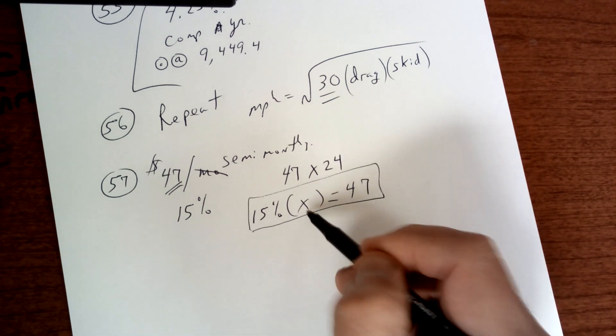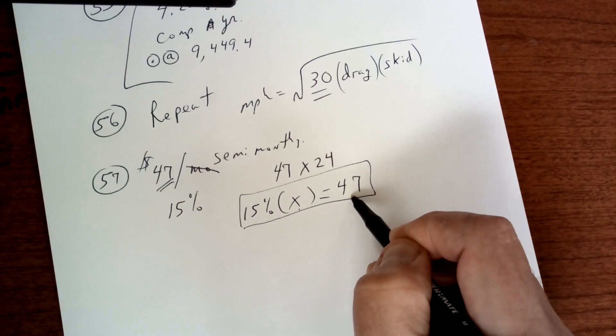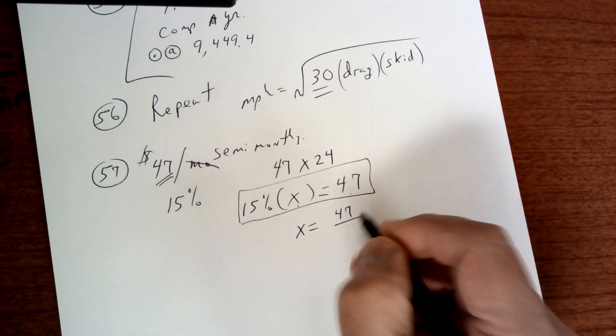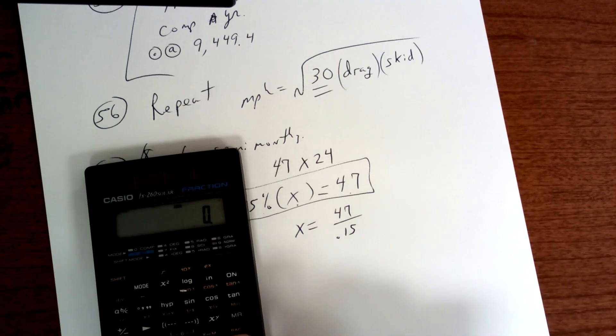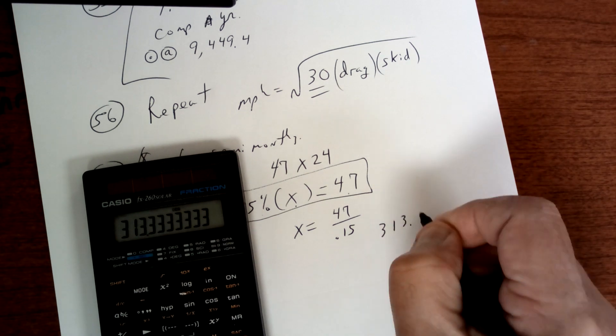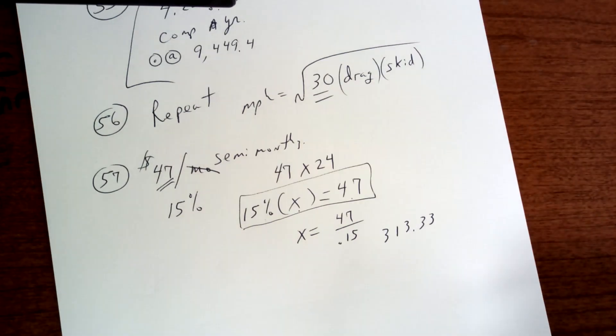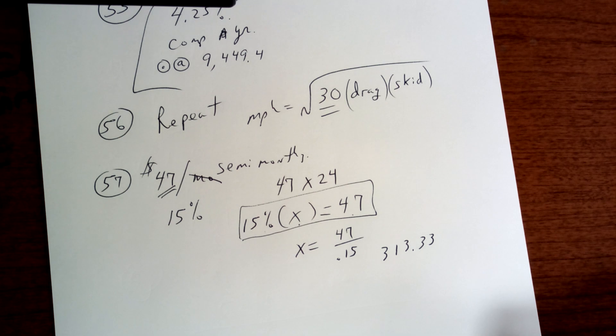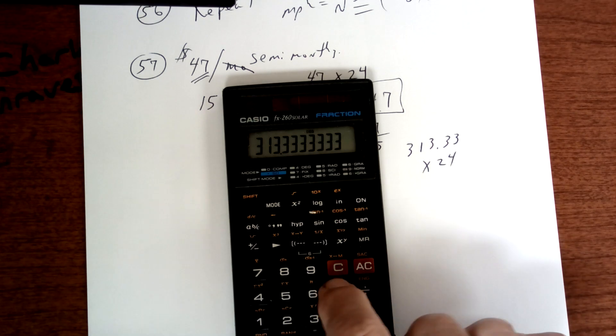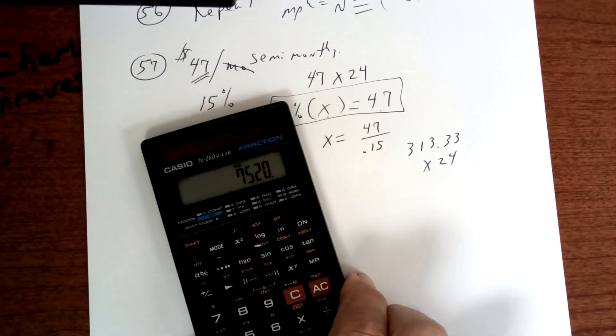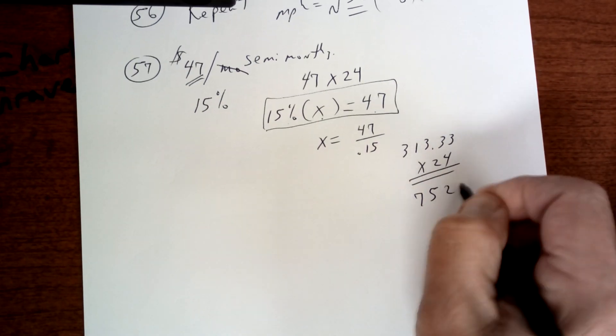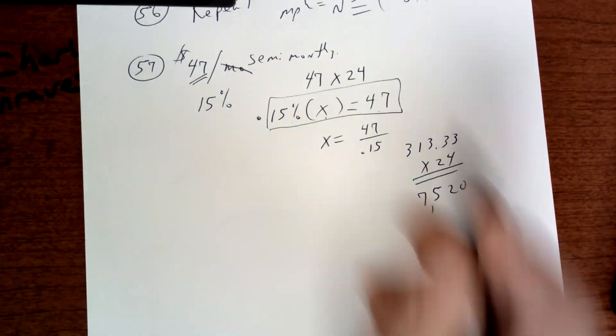So basically what you're going to say is 15% of what is equal to $47. Let's use this formula right here. 15% of what is $47. Now to solve that, you're going to divide by 15%. So X equals 47 divided by 0.15. So let's do that as 47 divided by 0.15 is going to give me 313.33. And that right there, you have to do 24 of those payments here. So times 24, because it's semi-monthly. So times 24, and the cost is going to be $7,520. This is the formula you want to use right here.